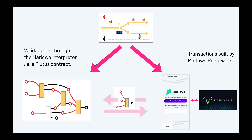Transactions are validated on-chain through the interpreter but must be built off-chain, and in some cases authorized. The blockchain is the central synchronisation point for the distributed system — the collection of instances of Marlowe Run interacting to execute the contract. In the demo, the two separate windows were sharing information simulated locally, but in production this will be information stored on the blockchain.